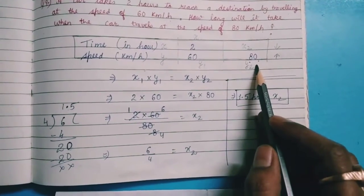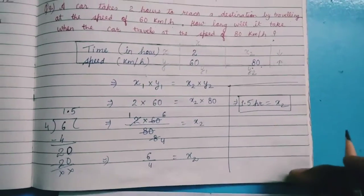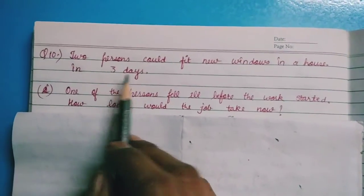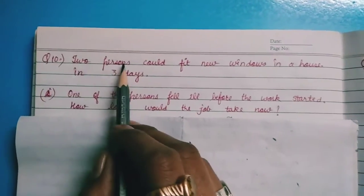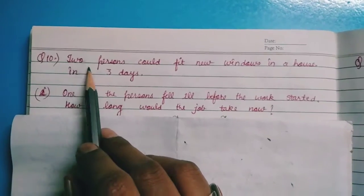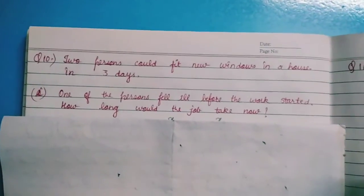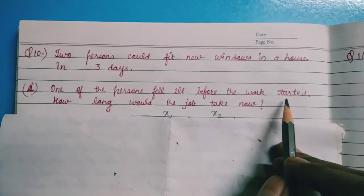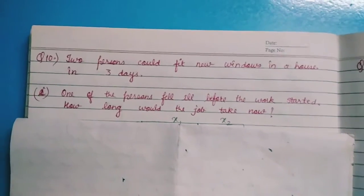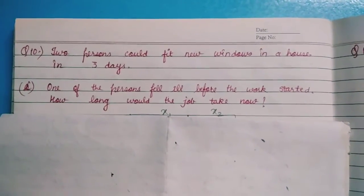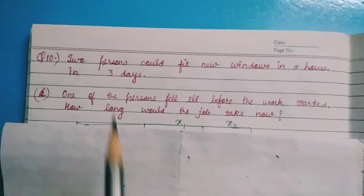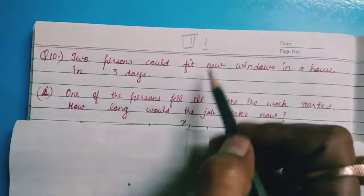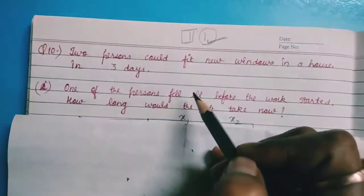So x₂ = 1.5 hours. When the speed is 80 km/h, the journey will be completed in 1.5 hours. Question number 10: Two persons could fit a new window in a house in 3 days. One of the persons falls ill before the work is started, so that person cannot do any work. How long would the job take now?